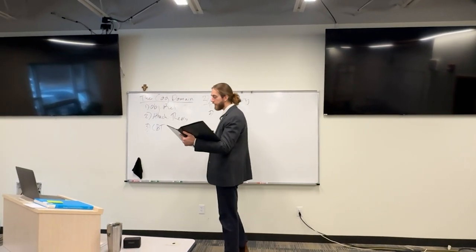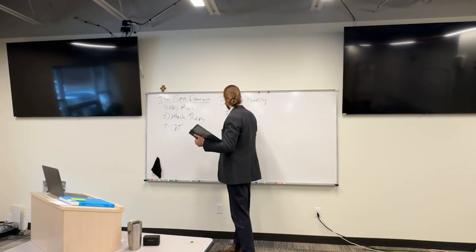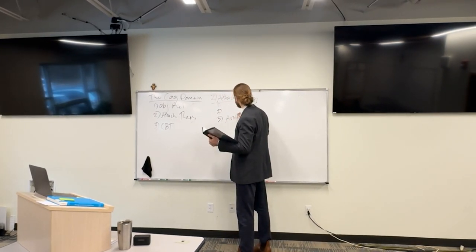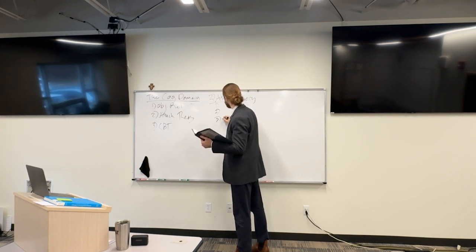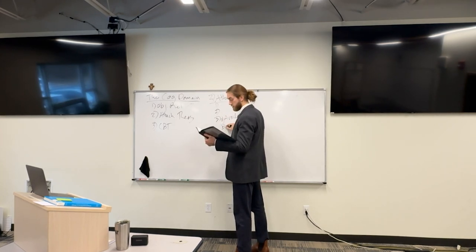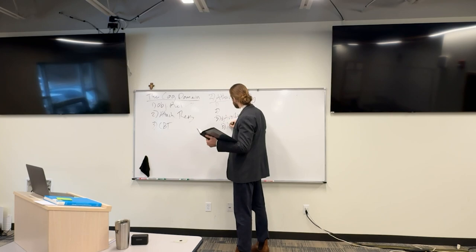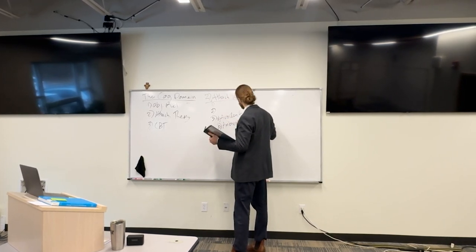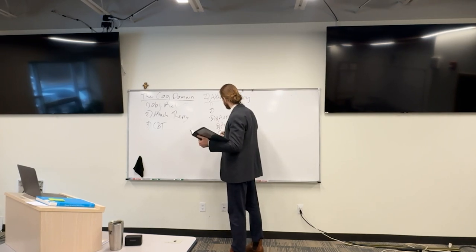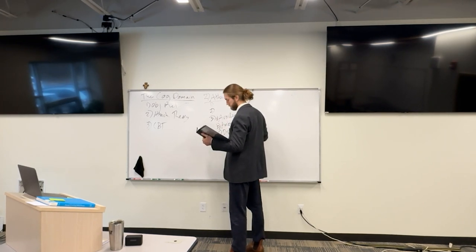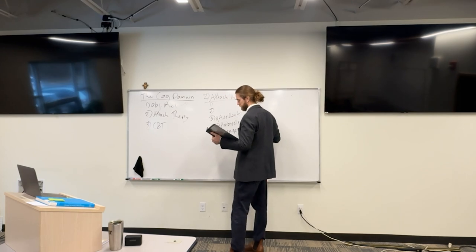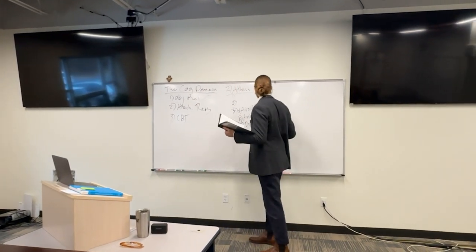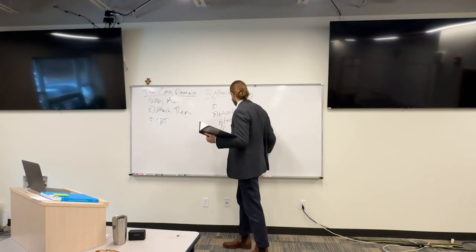Attachment theorists developed three different types of attachment: avoidant, ambivalent, and disorganized — in childhood. We'll speak briefly about these today and cover them in depth in a later chapter.